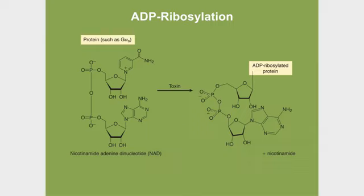And what these toxins do when they enter a cell: they look for NAD in the cell, they cleave off the niacin. Once the niacin is cleaved off, the rest of the molecule is ADP ribose. And ADP ribose is then attached onto a target G protein in covalent linkage — which affects the activity of that target protein. That's why the protein is now called ADP ribosylated.